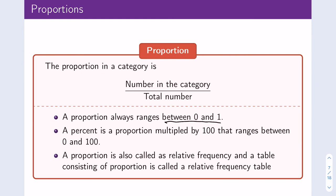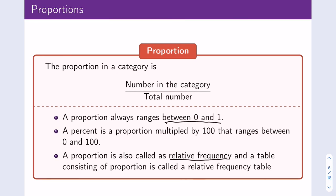I see every semester that students will have proportions greater than 1, so if you get a value like that, that's a sign to check your math. A proportion is also known as a relative frequency, and a table that consists of proportions is called a relative frequency table. A frequency table contains counts for each category, whereas a relative frequency table contains the proportions.